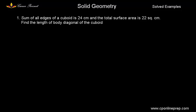The question given to us is the sum of all the edges of cuboid is 24 cm and the total surface area is 22 cm square. You have to find the length of the body diagonal of the cuboid. We know that the formula for finding the body diagonal D is under root of square of length plus square of width plus square of the height. So, we have to find this.